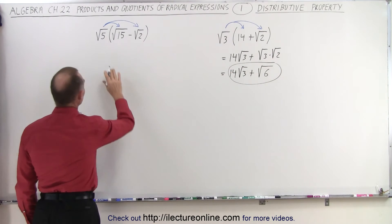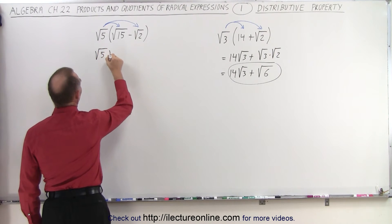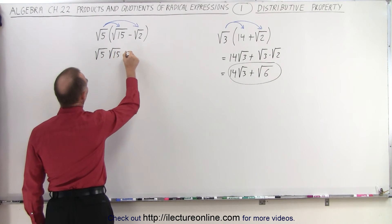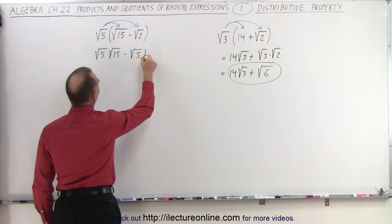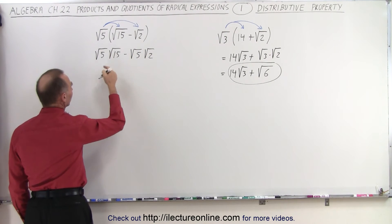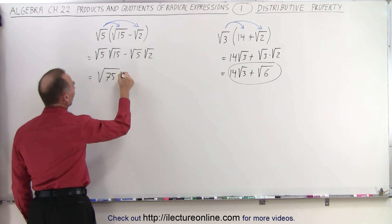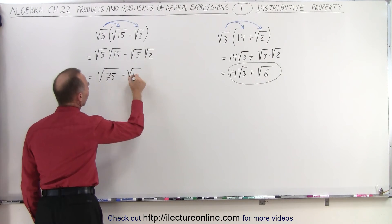Over here we do the same thing. We multiply these two together. So we have the square root of five times the square root of 15 minus the square root of five times the square root of two. The rule then says we can multiply what's inside the radicals. So this becomes equal to the square root of 75 minus the square root of 10.